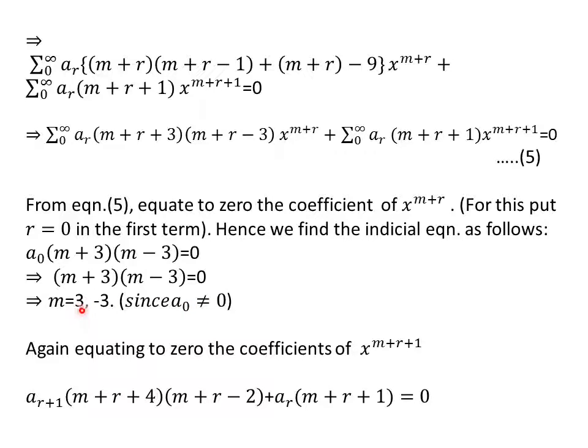This gives m equal to three and minus three. Now we equate to zero the coefficient of x to the power m plus r plus one. For this go to equation five. In the first term, you have to replace r with r plus one and you will get a r plus one times m plus r plus four times m plus r minus two. In the second term, we have to put it as it is and we get a r times m plus r plus one equal to zero.